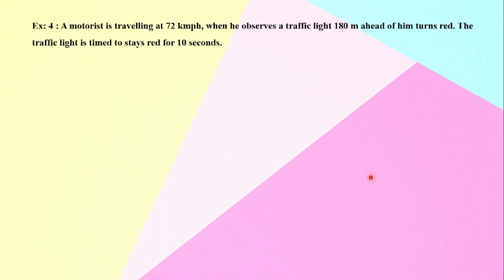Once again, welcome back. In this new problem, which is related to uniform motion, specifically in the horizontal direction, we have a motorist traveling at a speed of 72 kilometers per hour when he observes a traffic light 180 meters ahead of him turns red. The traffic light is timed to stay red for 10 seconds.